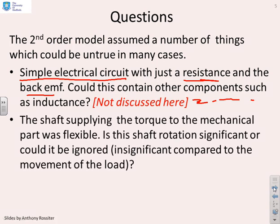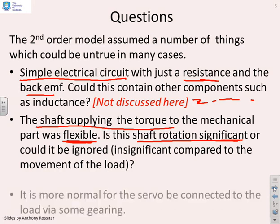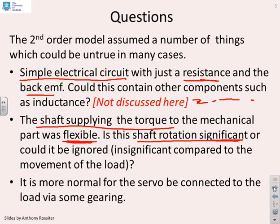Next, we assumed that the shaft supplying the torque to the mechanical part was flexible, it can twist. In practice, you could probably argue that the shaft rotation is insignificant compared to the movement of the load, and therefore this can be ignored. How does that change our modelling? And finally, it's more normal for the servo to be connected to the load via some gearing. So how does that affect our model if we put some gears into the system?